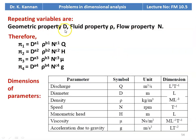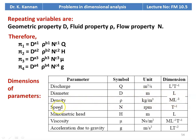The repeating variables are: geometric property d, fluid property rho, and flow property n. The pi terms are: pi1 = d^a1 · rho^b1 · n^c1 · q, pi2 = d^a2 · rho^b2 · n^c2 · h, pi3 = d^a3 · rho^b3 · n^c3 · mu, pi4 = d^a4 · rho^b4 · n^c4 · g. Dimensions: q — L³T⁻¹, d — L, rho — ML⁻³, n — T⁻¹, h — L, mu — ML⁻¹T⁻¹, g — LT⁻².